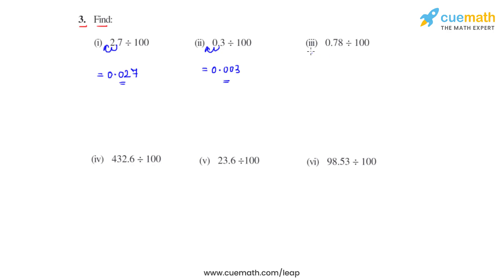Coming to the third bit, we have 0.78 which is divided by 100. So the decimal moves two places towards right. Our answer for this bit will be 0.0078.